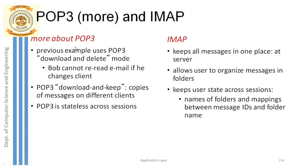Bob wants to load his inbox page. First he logs in — that is the authorization phase. Once login is done, he enters the transaction stage. In download-and-delete mode, Bob's inbox is loaded from the shared POP3 server to Bob's system, which is the download step. After that, the copy of those mails in the POP3 server will be deleted.